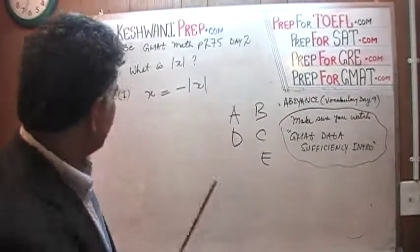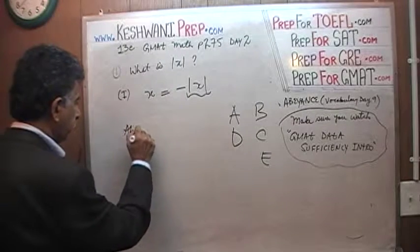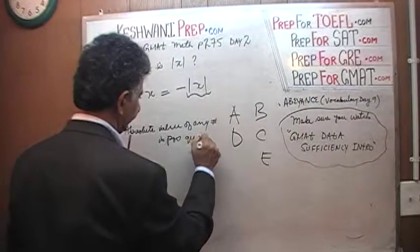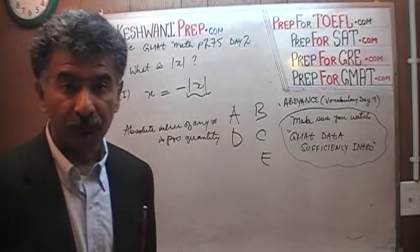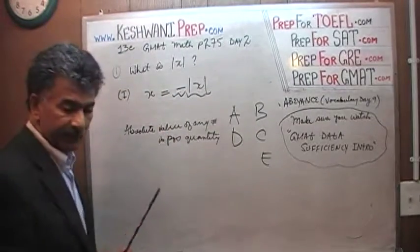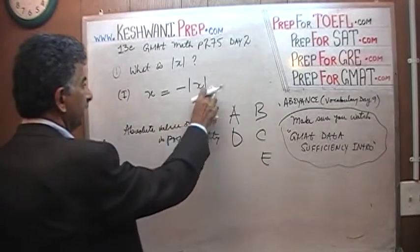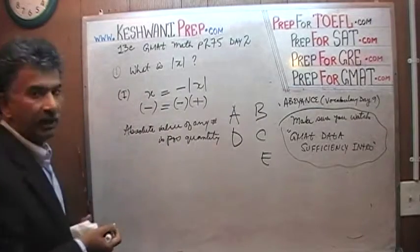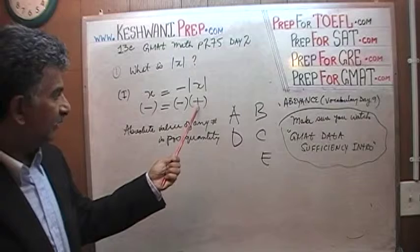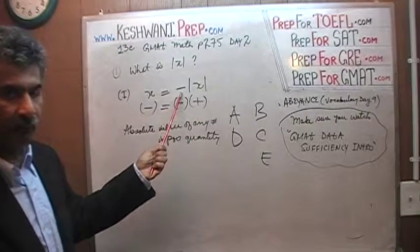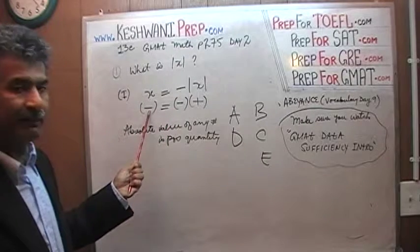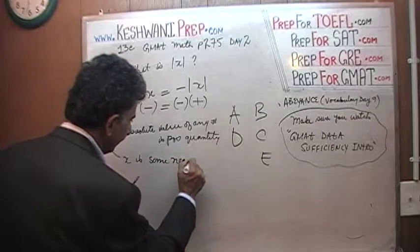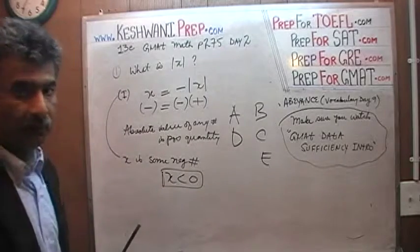What does this tell you? Well, we know that the absolute value of any number is a positive quantity — that's exactly what absolute value means. But then it has a negative sign in front of it. So if this is a positive quantity and it's got a negative in front of it, that tells us that X, whatever it is, is some negative number. The first statement tells us that X is some negative number — in other words, X is less than 0. And that's all we can infer from the first statement.